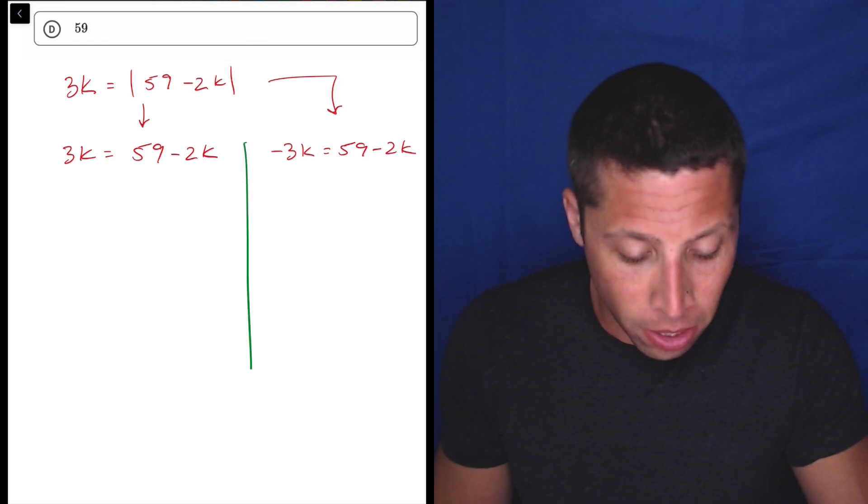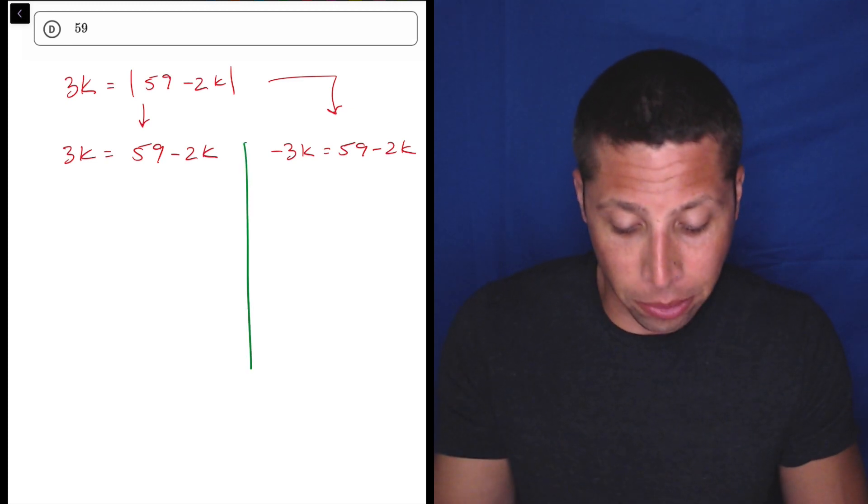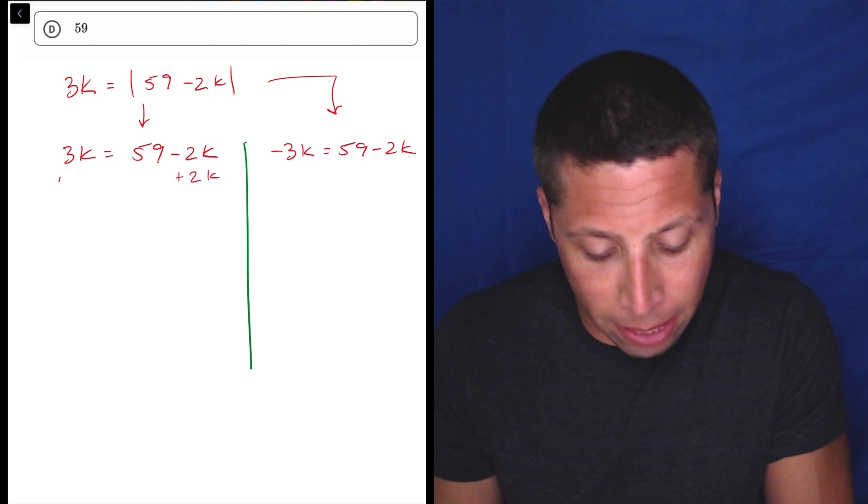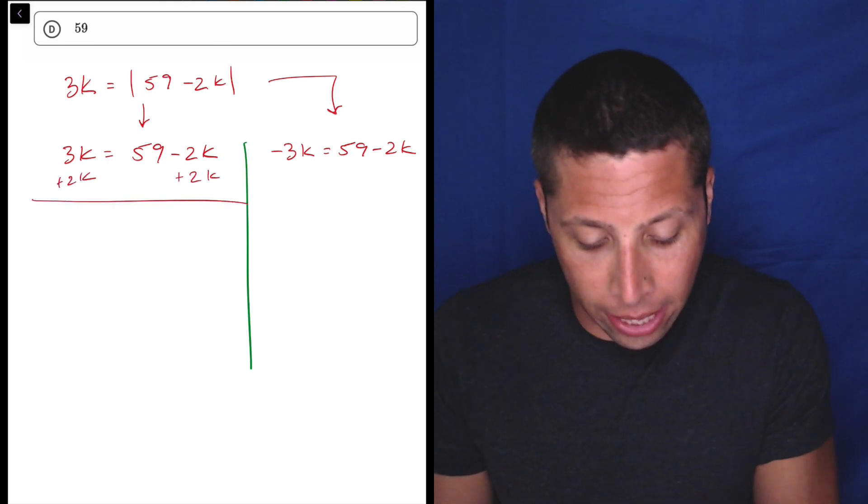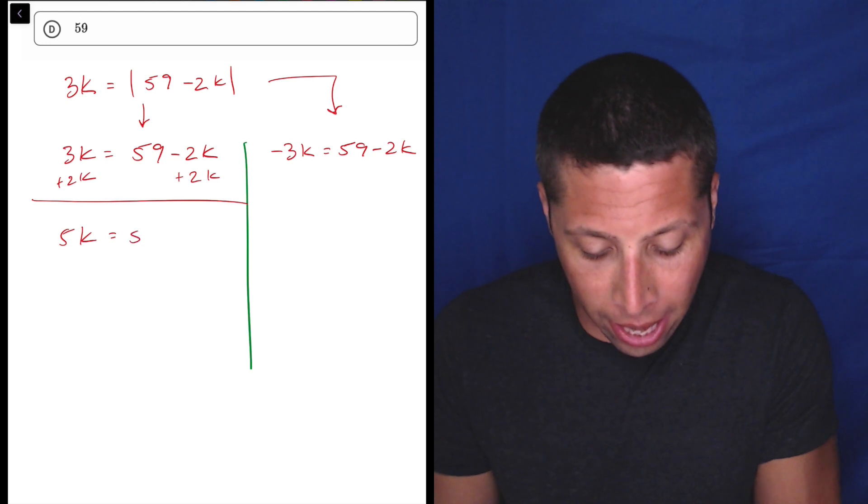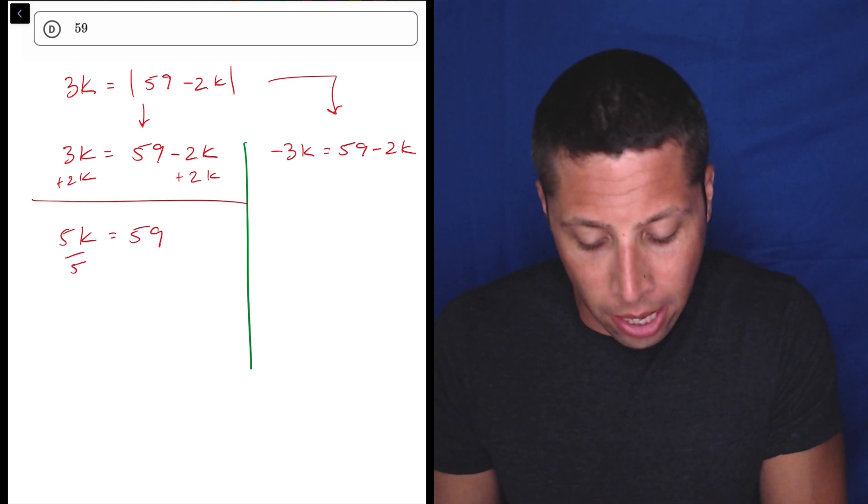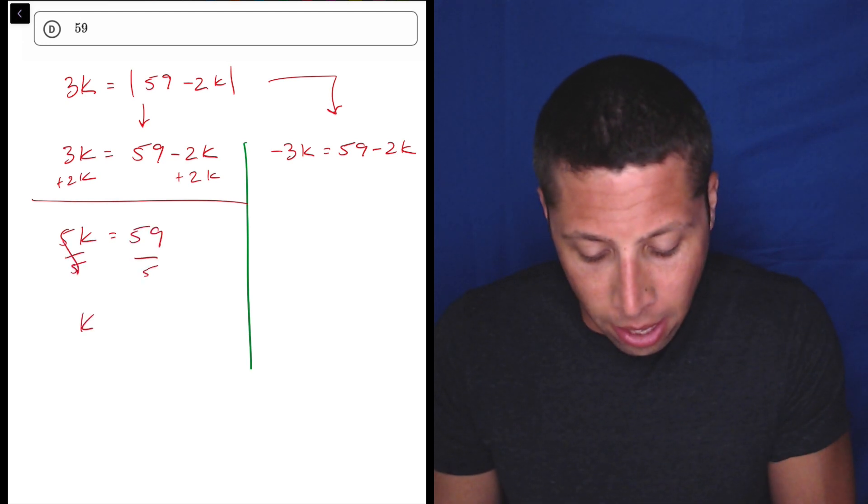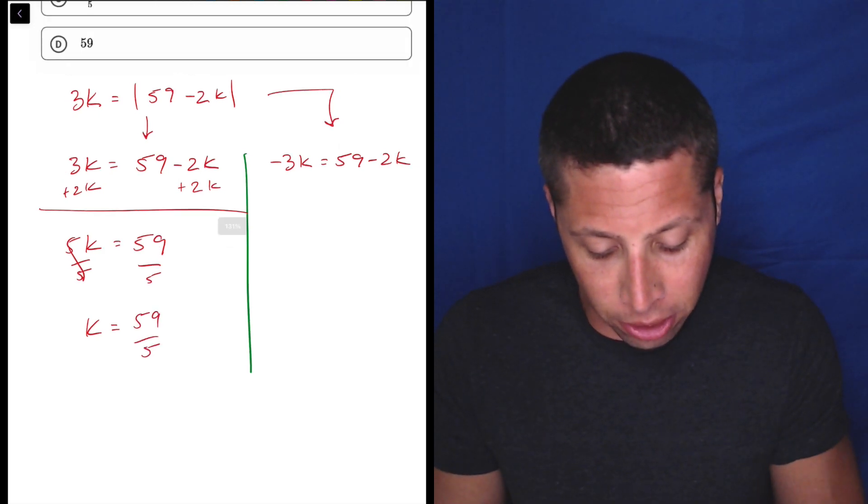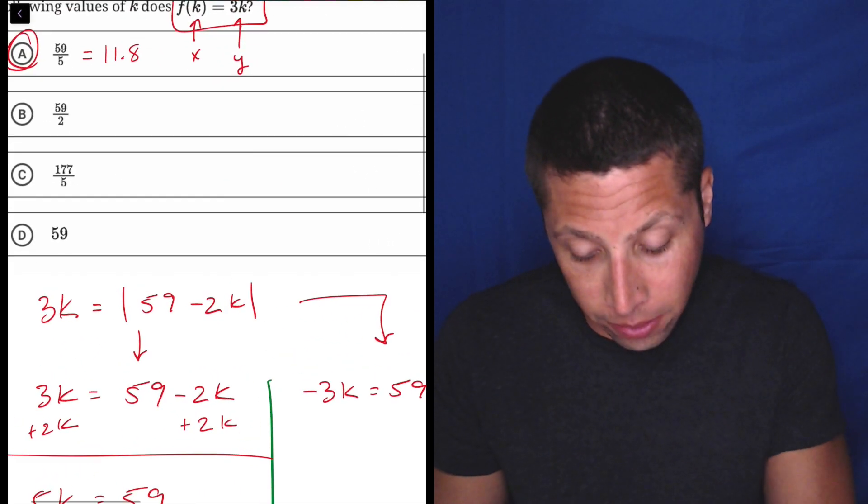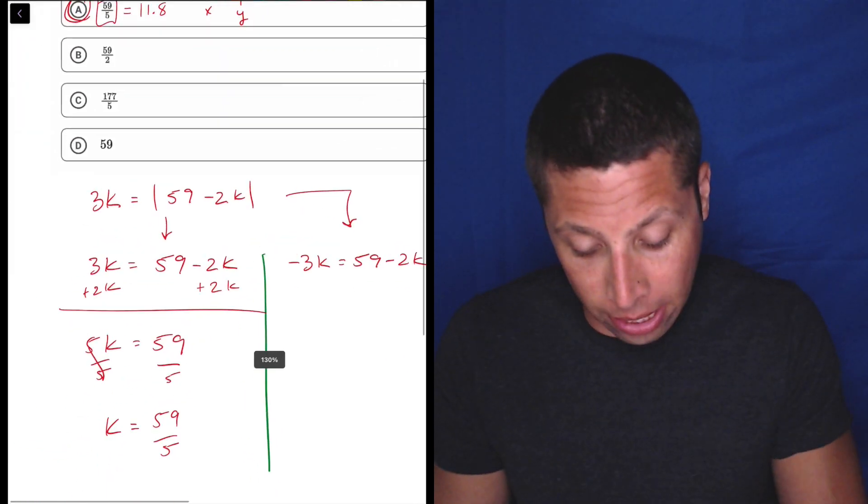But in terms of solving now, let's just start with the easy one. Let's start with the left side. I would add 2K to both sides to get K kind of combined. So 5K is equal to 59. And then just divide by 5. And I could put that in the calculator, but most of the answer choices are fractions. So I would just go, oh, 59 over 5. Hey, that's what I got.